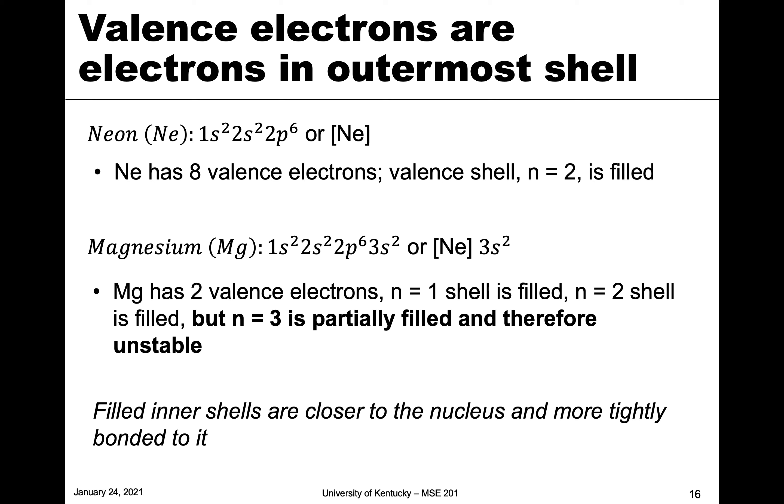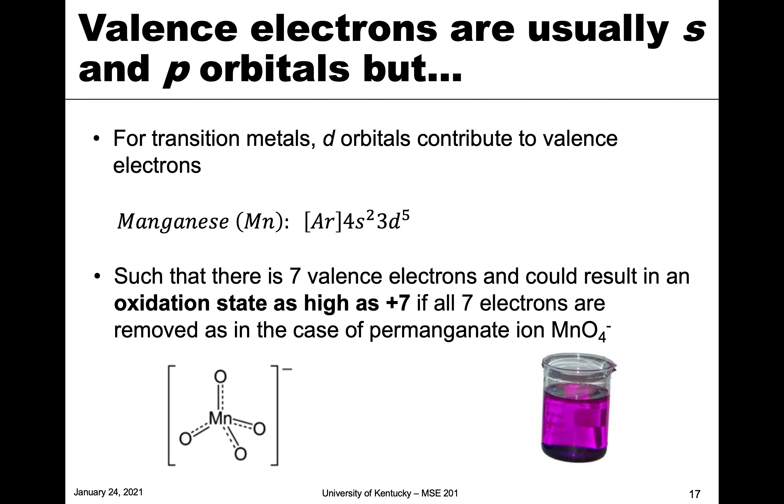And so these valence shells, which are the outermost, would obviously be further from the nucleus and less tightly bonded. And these are what have an effect in bonding.